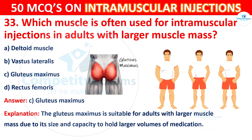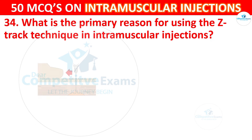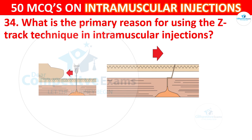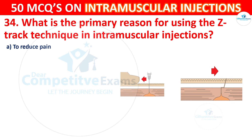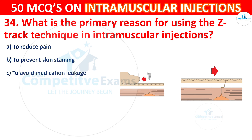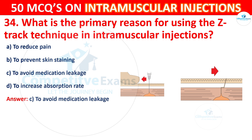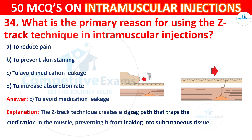Question 34: What is the primary reason for using the Z-Track technique in intramuscular injections? Options are: to reduce pain, prevent skin staining, avoid medication leakage, or to increase absorption rate. The correct answer is C, to avoid medication leakage. The Z-Track technique creates a zigzag path that traps the medication in the muscle, preventing it from leaking into subcutaneous tissues.